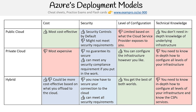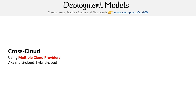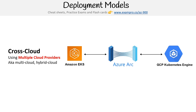One more deployment model worth knowing is cross-cloud — not on the actual exam but important to understand. Cross-cloud is when you're using multiple cloud providers, sometimes called multi-cloud or hybrid cloud. An example is Azure Arc, which extends your control plane so you can run Kubernetes containers on different platforms — EKS on AWS or GCP's Kubernetes engine — with all virtual machines treated like they're on the same network. Cross-cloud is becoming popular with extremely large organizations that have unique requirements.